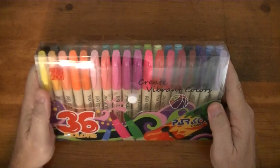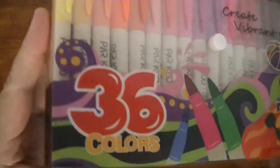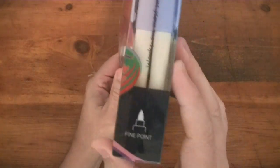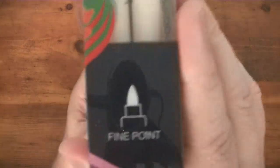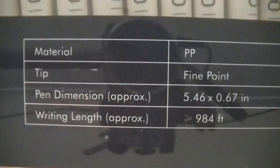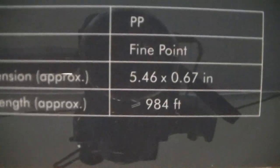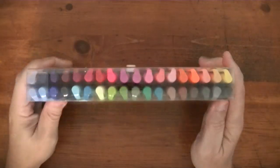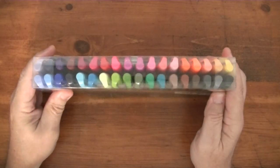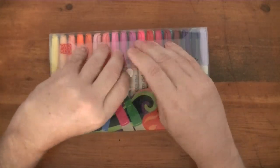All right, well these are permanent markers, color markers from Parkour. There's 36 in this pack. I love nice permanent markers. It says fine point. Here's what the back looks like. There's a reflection of a camera. Okay cool, I won't edit that out.